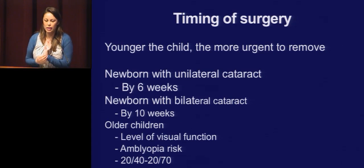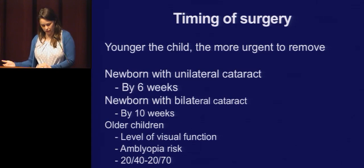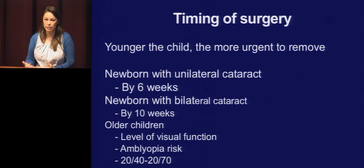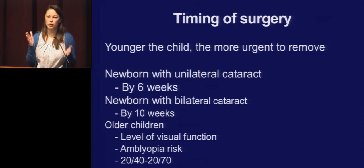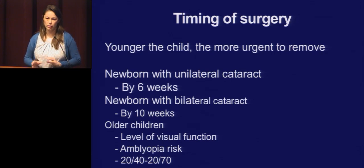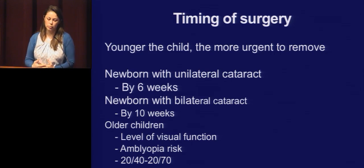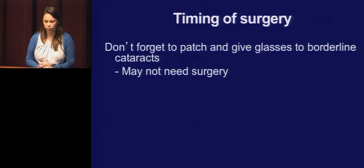Posterior capsular opacification is something you have to address in planning for the future of the child. Unlike adults, you can't always just sit them at a YAG. The timing of surgery matters: the younger the child, the more urgent it is to remove the cataract. A newborn with a unilateral cataract is the most urgent — ideally within the first six weeks, and most agree after four weeks to minimize risk while maximizing benefit. For bilateral cases, you have a little more time — first eye around six to eight weeks, second eye eight to ten weeks. In older children, timing is based on level of function, amblyopia risk, and age. In the teen years, 20/40 or better we watch; worse than 20/40, we proceed.